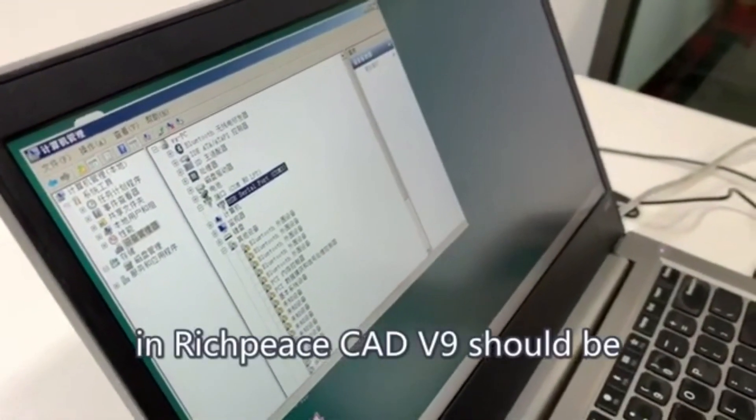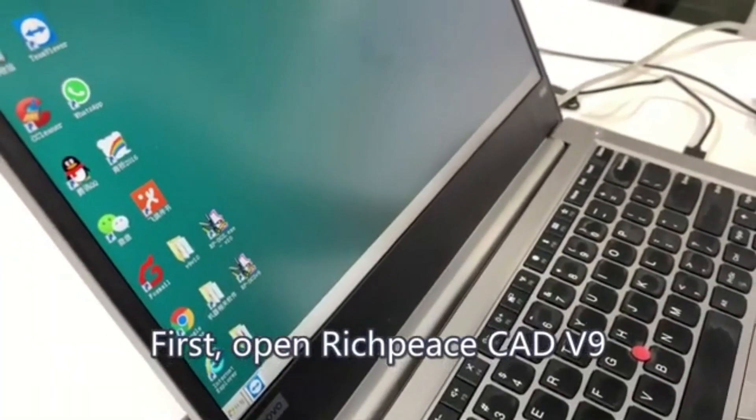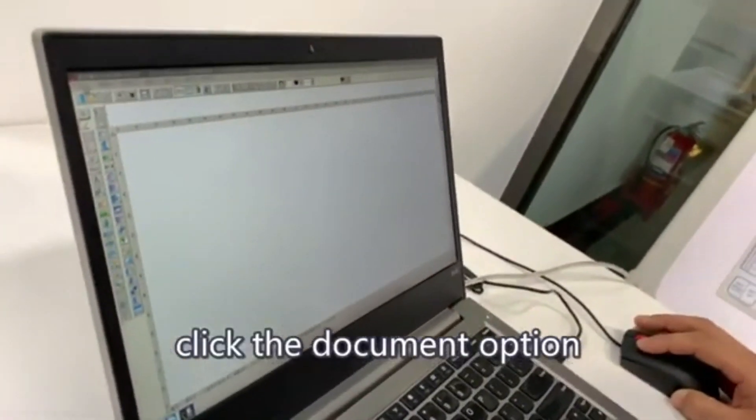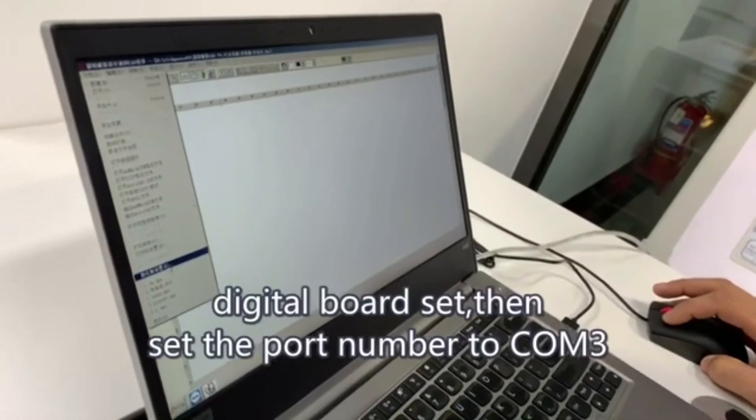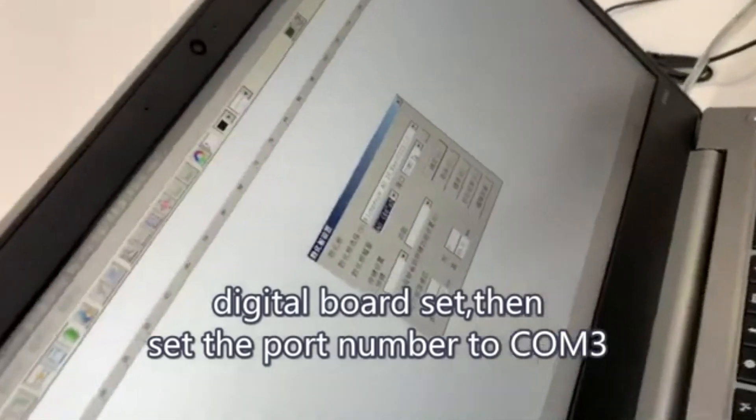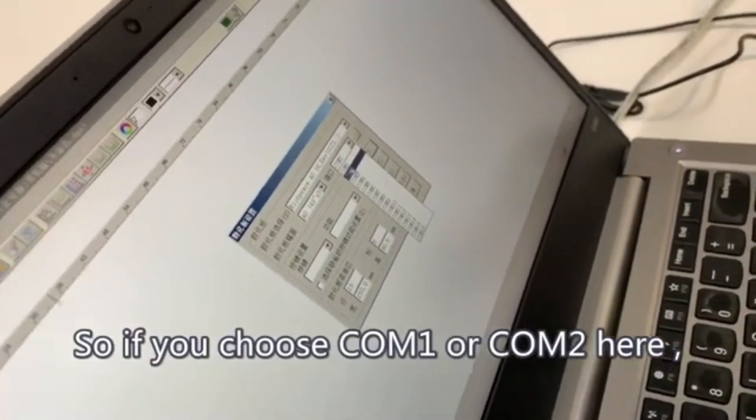The Rich-piece digitalizer in Rich-piece CDV9 should set with the same COM port. First, open Rich-piece CDV9, click the document option, digitizer board set, then set board number to COM3, same as the COM port in the previous equipment manager.